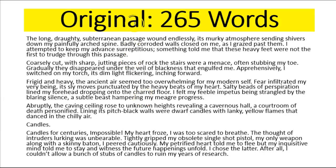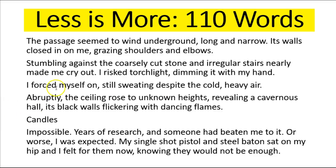So this was Hrishikesh's original 265 words, and now this is what we're left with: 110 words, which includes more useful detail for the reader even though it's less than half the length. Let's hear it in its entirety so you get that feeling of what is included and how that's better than what's being left out. 'The passage seemed to wind underground, long and narrow. Its walls closed in on me, grazing shoulders and elbows.'